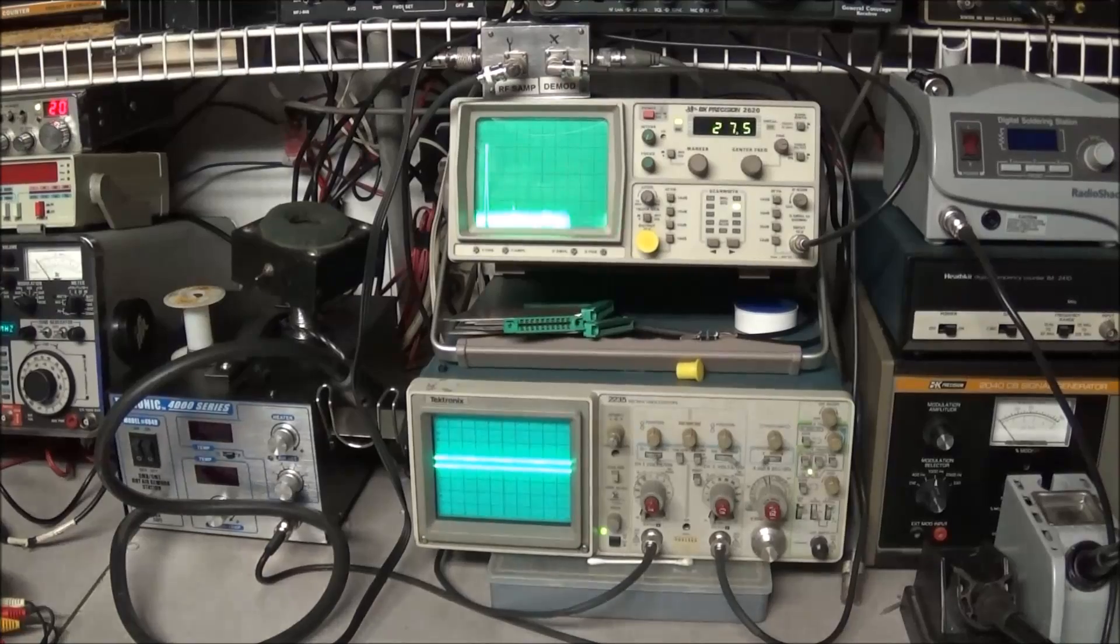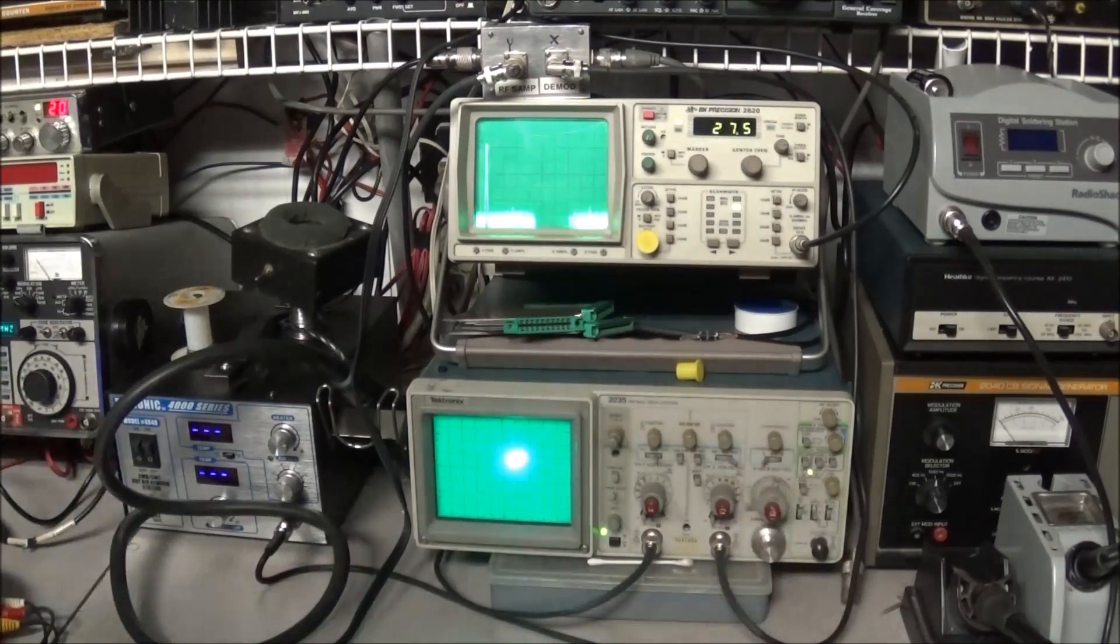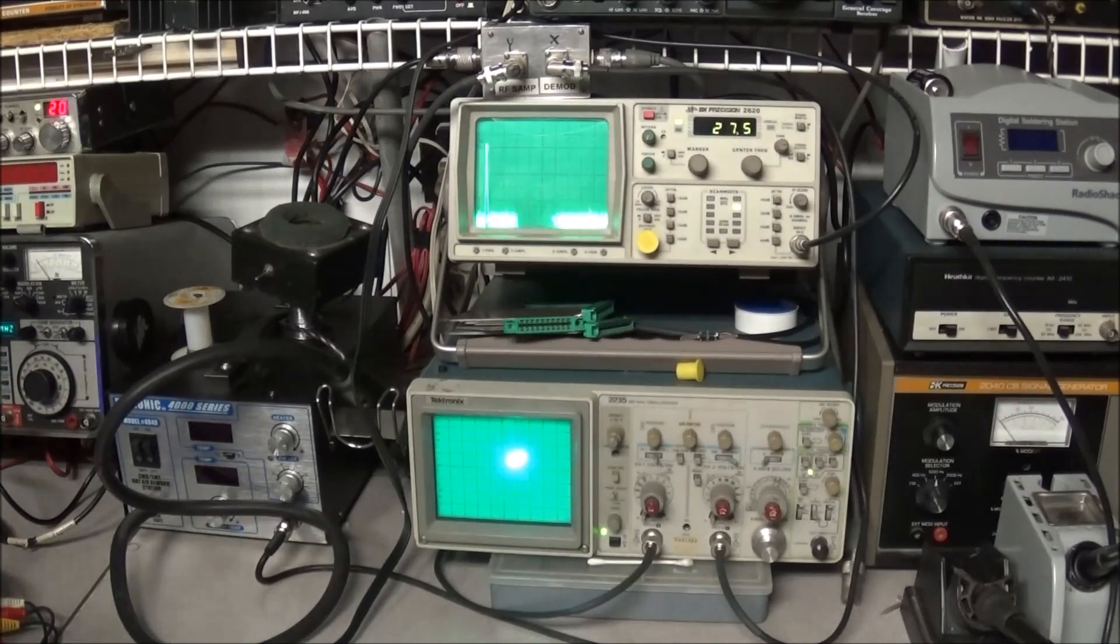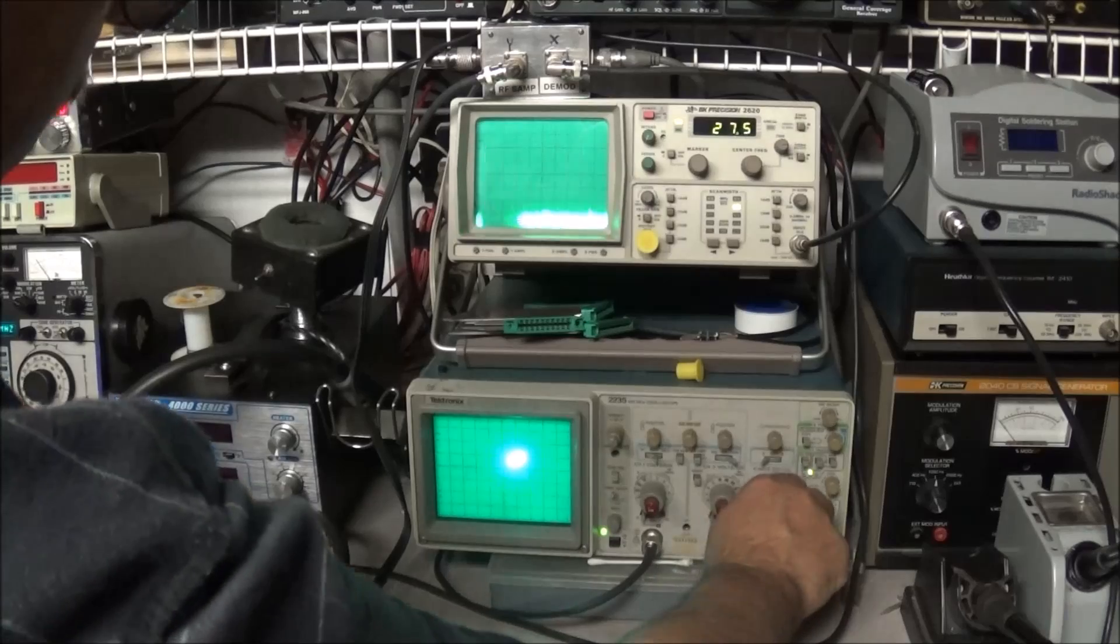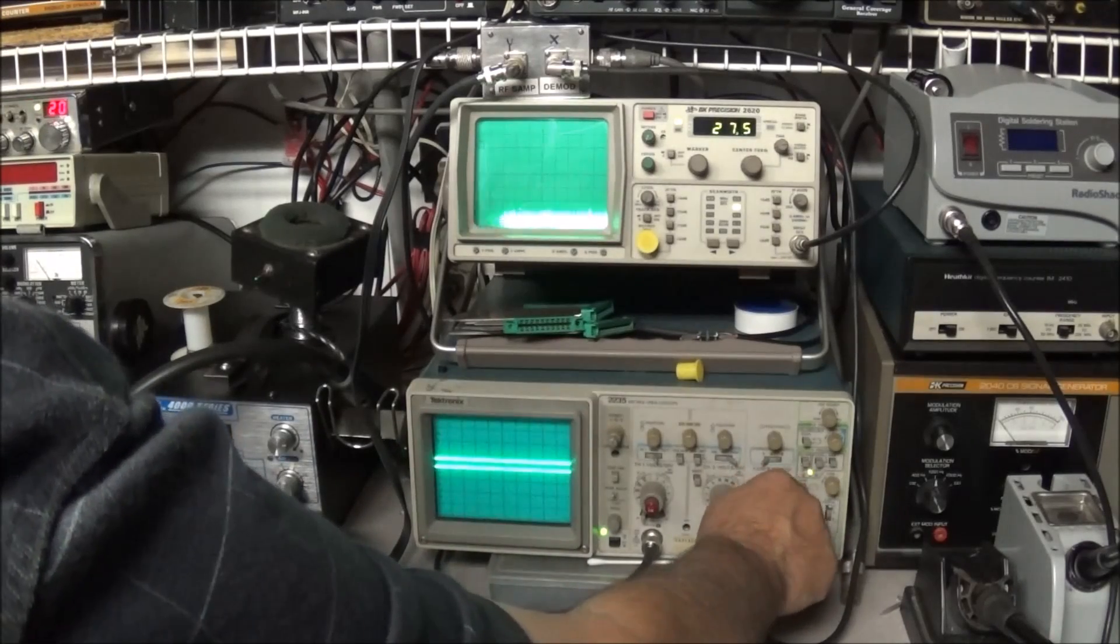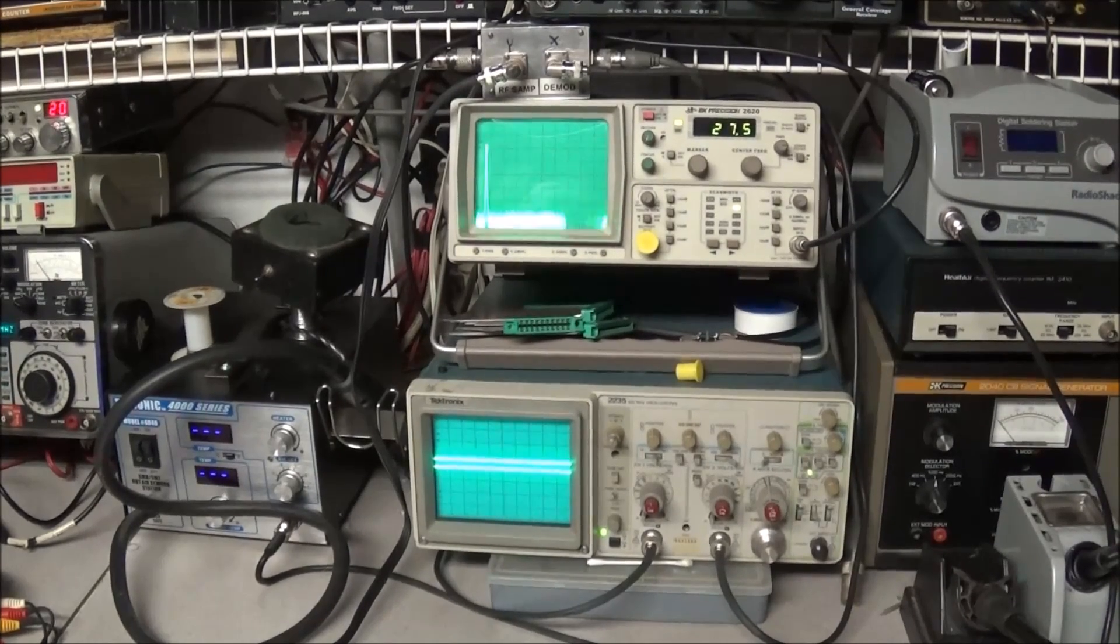For single sideband you can actually switch the scope over to XY mode and watch your trapezoid waveform. So just a little bit of tips on how to monitor your transmitter to make sure you got a good clean signal coming out.